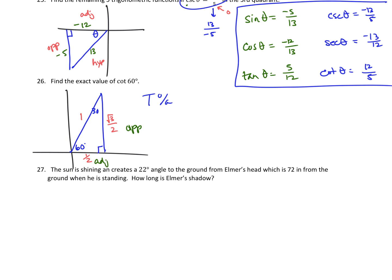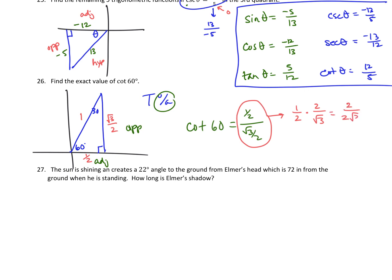Cotangent of 60 degrees is the reciprocal of tangent — adjacent over opposite. The opposite from our 60 degrees is root 3 over 2, and the adjacent is 1/2. So cotangent of 60 equals 1/2 over root 3 over 2. Dividing fractions, multiply by the reciprocal 2 over root 3, giving 2 over 2 root 3, which simplifies to 1 over root 3. Rationalizing by multiplying by root 3 over root 3: cotangent of 60 degrees equals root 3 over 3.